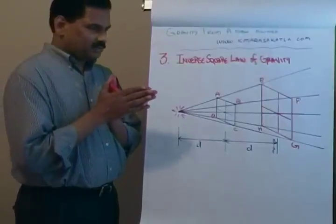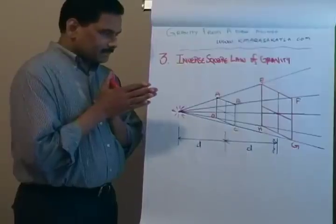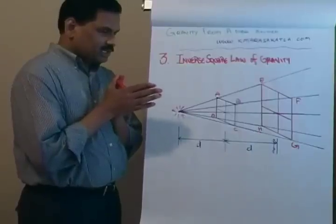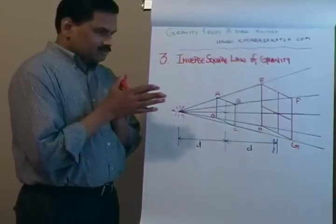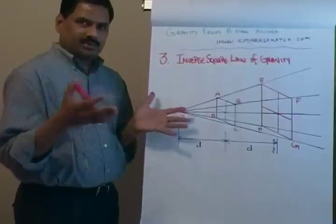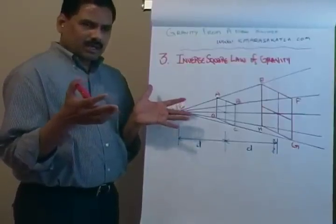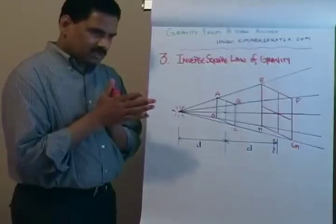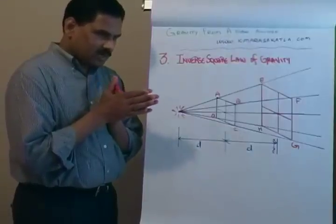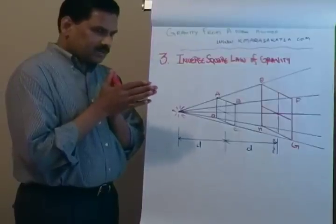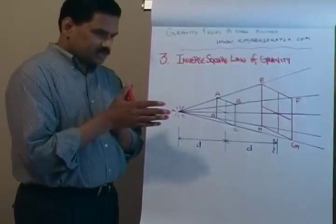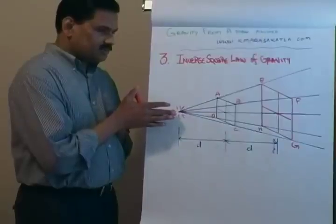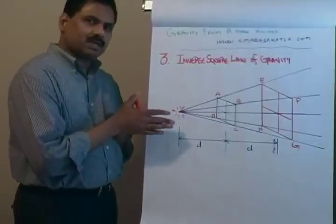It's basically derived from the notion that Sun, Sun is a huge, huge object and even if we compress that object to a point mass, it will measure same amount of mass. So with that assumption, this theory, this inverse square of gravity was derived.